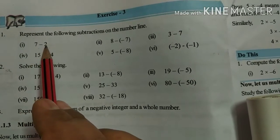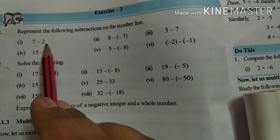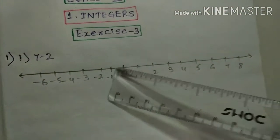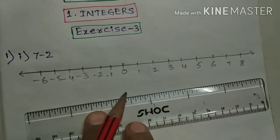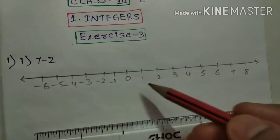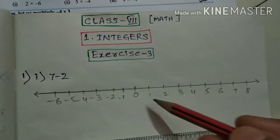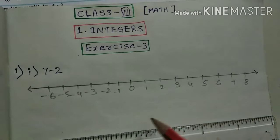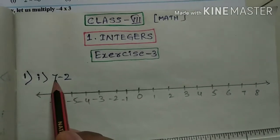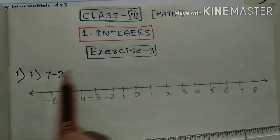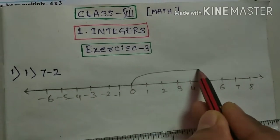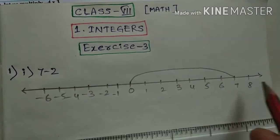First one is 7 minus 2. How to represent this 7 minus 2 on the number line? First, draw a number line — a straight line. Afterwards, represent the positive integers and negative integers on that number line. First, see the first number: what is 7? So first move to 7 — from 0 to 7, move like this.